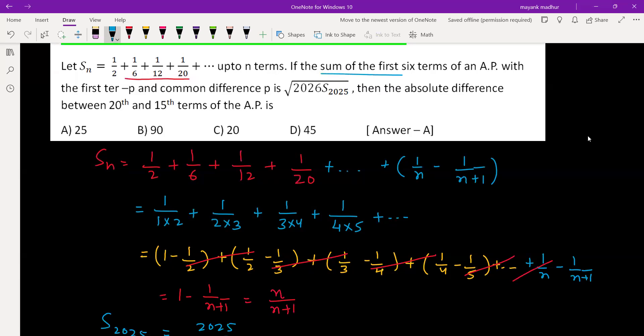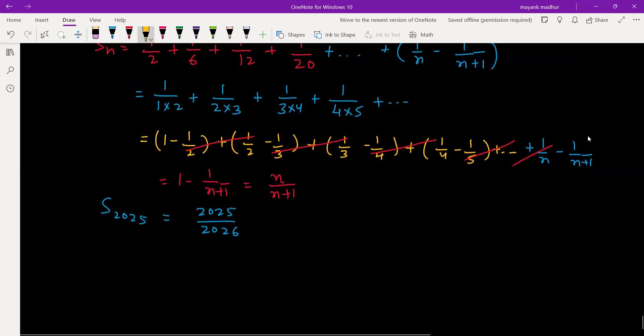Sum of the first six terms of an AP with first term negative p and common difference p. So we will do the cross multiplication and we got it as 2026 times S_2025 equal to 2025. When you take a square root on both sides, you get this value as 45.